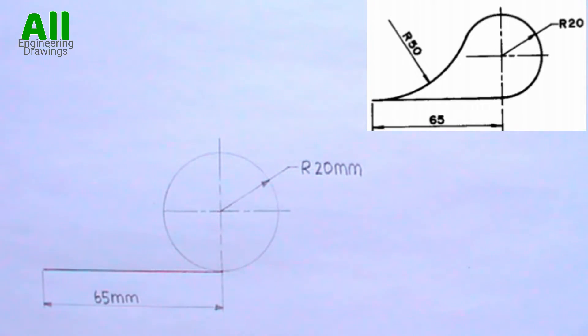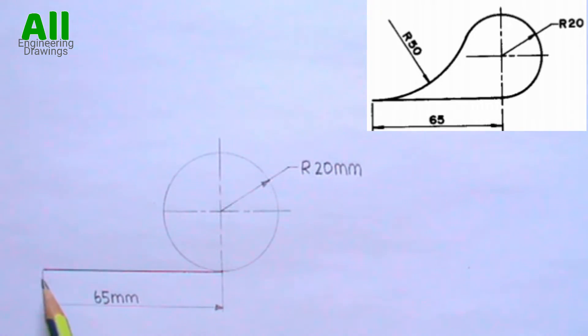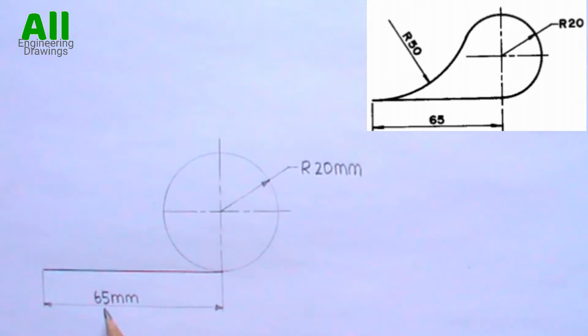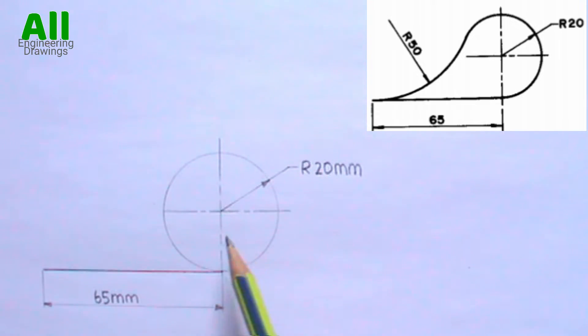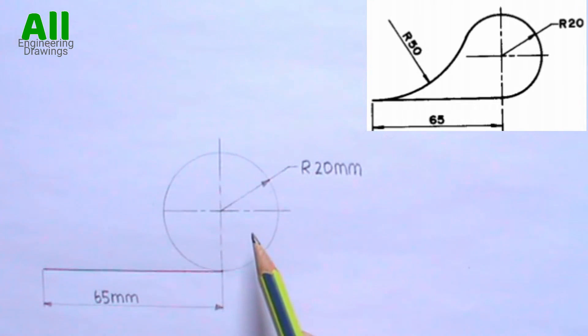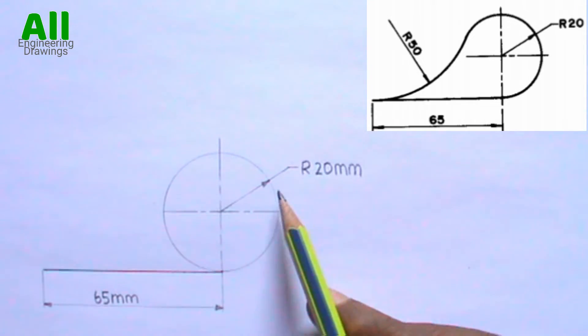To solve the above tangency problem, first you have to draw your layout this way. As you can see, the length of this line from here to here is 65mm and the radius of this circle is 20mm.